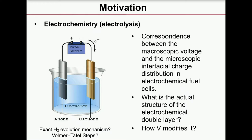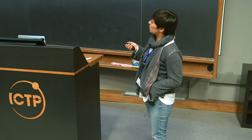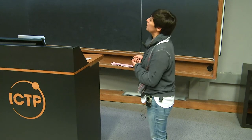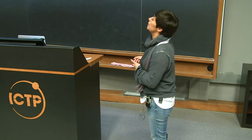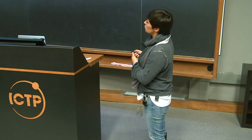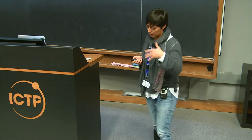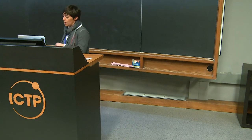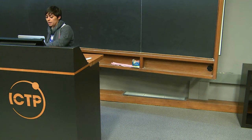Ideally, what we want to know is the correspondence between the macroscopic voltage that we apply to an electrochemical cell and what is the actual interfacial charge that occurs at the surface of the metal interacting with water, or with an electrolyte — liquid water containing different ions. And beyond that, what is the actual structure of the electrochemical double layer at that interface.